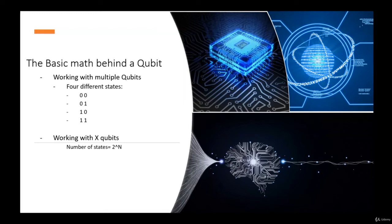For example, with two qubits it's 2 to the power of 2, giving us four states simultaneously. But with 50 qubits, the number of possible states will be 2 to the power of 50, which is a pretty tremendous amount of states.